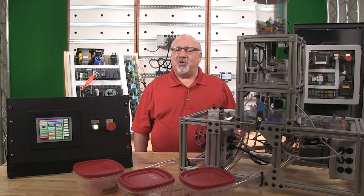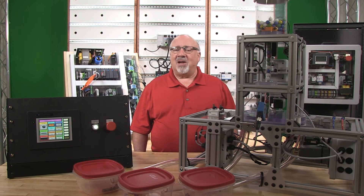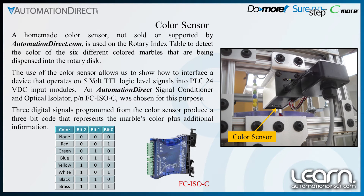The two reject slide cylinders used for the steel and brass balls are equipped with magnetic sensors actuated from the cylinder's magnetic piston. These sensors are used to determine the position of the slide cylinder. The cylinder fully extended sensor is used to make sure the reject gates are fully closed before allowing an index to occur. The cylinder fully retracted sensor is used to make sure the reject gate has made a full stroke. A homemade color sensor, not sold or supported by automationdirect.com, is used on the rotary index table to detect the color of the different colored marbles.